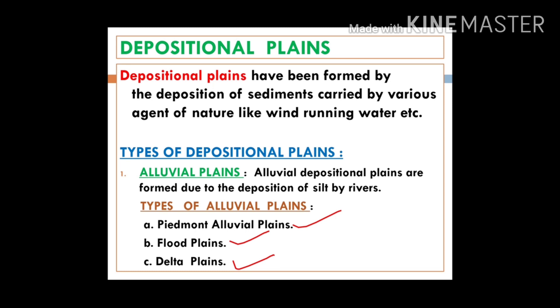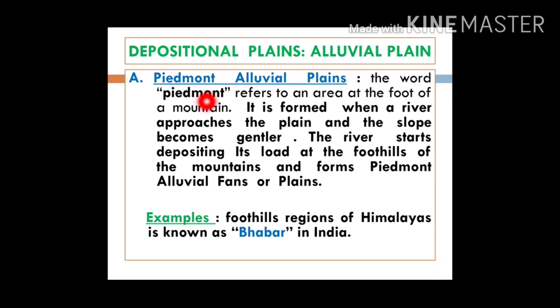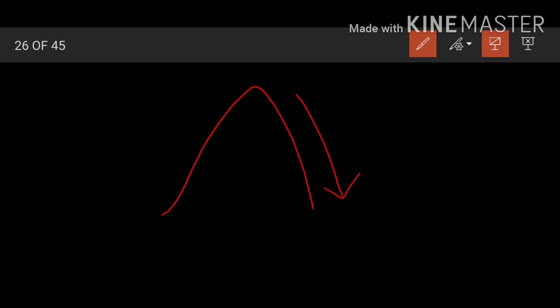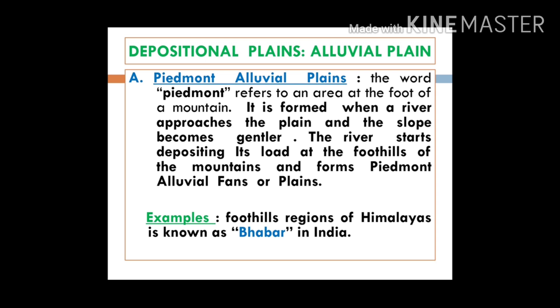The Piedmont Plain — the word 'piedmont' refers to an area at the foot of the mountain. When a river comes down and reaches the foot of the mountain, all the sediments spread like a fan because the slope suddenly reduces and the river is no longer able to hold such a huge amount of sediment. It spreads out and forms a fan-like structure, known as alluvial fans. A very good example in India is the foothill region of the Himalayas, known as the Bhabar.